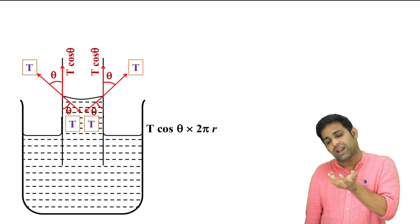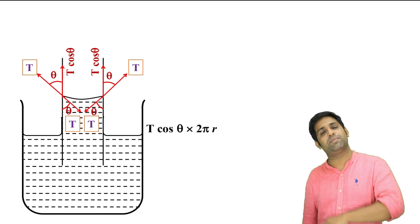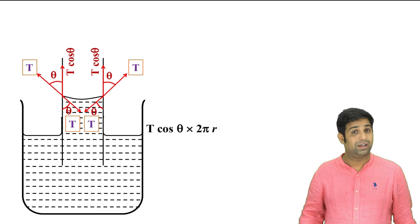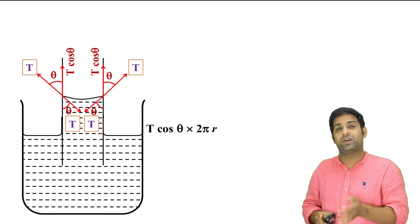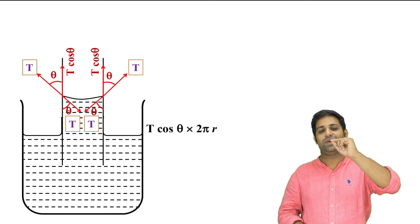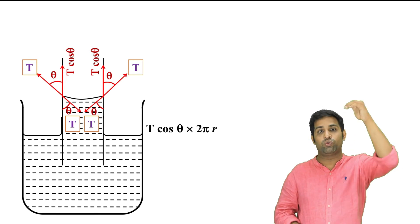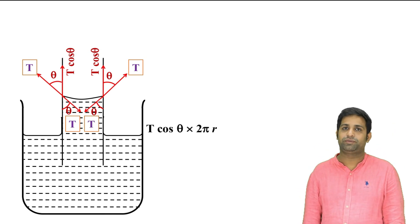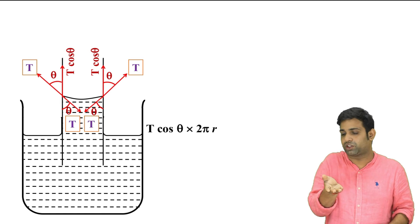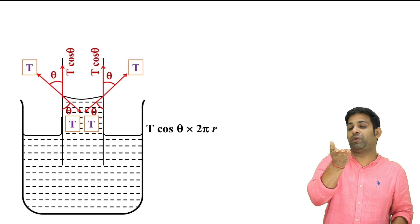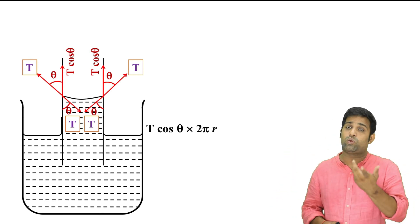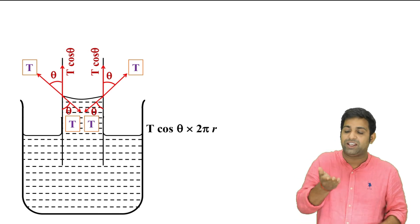This upward force is what causes the liquid to rise in the capillary. The liquid keeps rising, but it will stop at some point because the weight of the liquid column acts downward. There will come a point when the weight is equal and opposite to the upward surface tension force, and the liquid will be held at that equilibrium height.